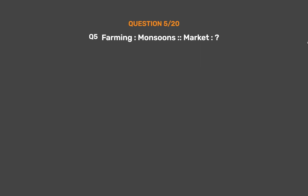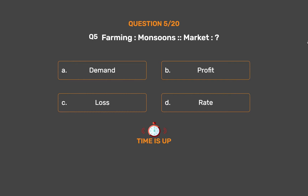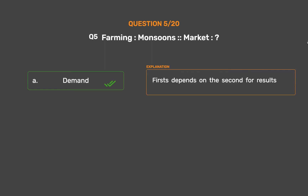Question No. 5. Farming : Monsoons :: Market : ? Option A: Demand. Option B: Profit. Option C: Loss. Option D: Rate. The correct answer is Option A, Demand. The first depends on the second for results.